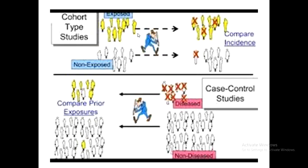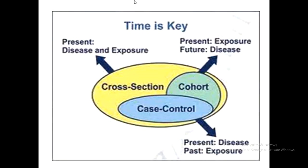In case control studies the researcher calculates odds ratios, while in cohort studies the researcher calculates relative risk — both measure the association between exposure and outcome. Time is the key to identifying which study design is appropriate: in cross-sectional surveys the disease and exposure are present simultaneously, whereas in case control studies the disease is already present and exposure is measured in the past.